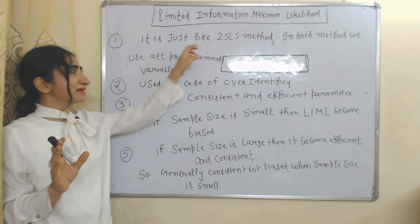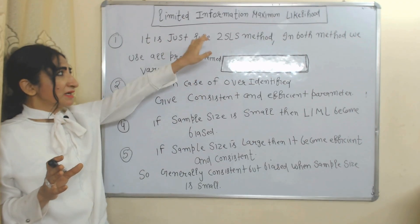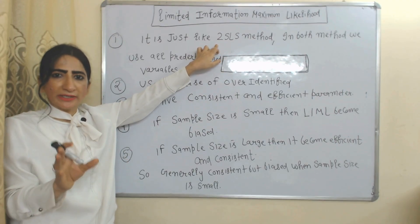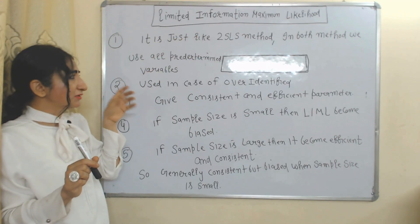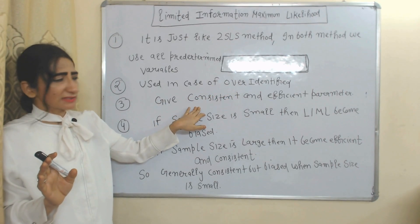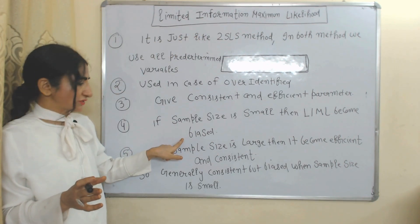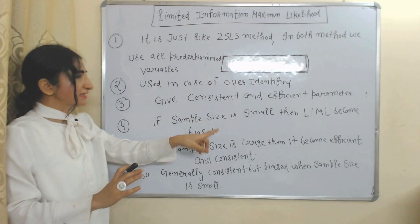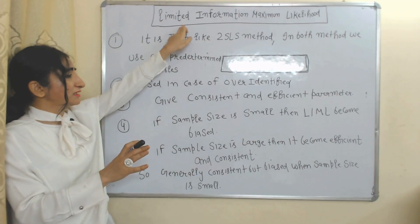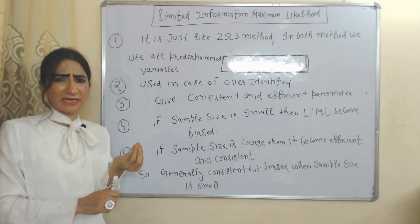The next important method is the Limited Information Maximum Likelihood (LIML) method. This method is similar to 2SLS, as both use all predetermined variables. However, while 2SLS can be used in both just-identified and over-identified cases, LIML is used only in the over-identified case. LIML gives consistent and efficient parameters, but if the sample size is small it becomes biased. As sample size increases, it provides consistent results.